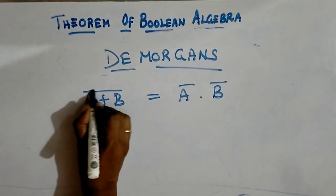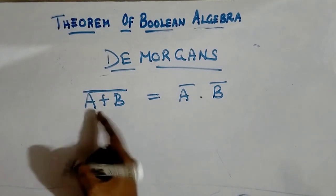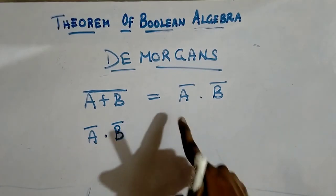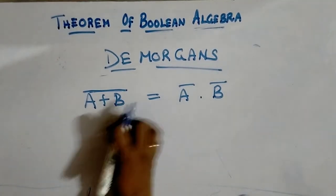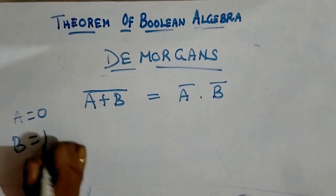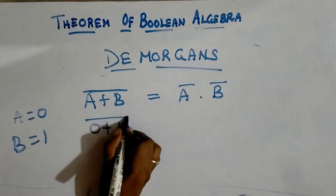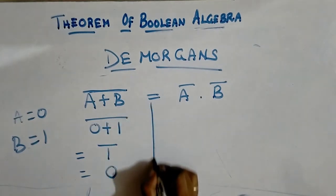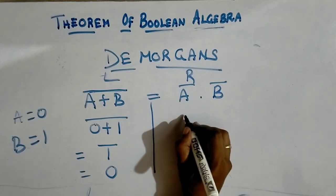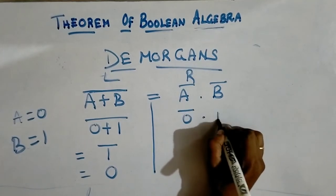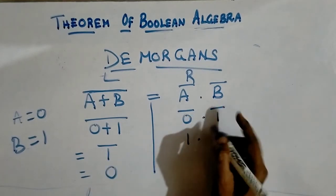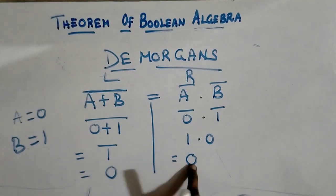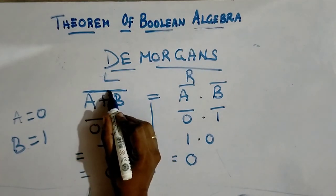The first De Morgan's law: complement of (A plus B) equals A-bar dot B-bar. When you complement A plus B, A becomes A-bar and B becomes B-bar, and the plus becomes dot. For example, A value is 0 and B value is 1: 0 plus 1 equals 1, and complement of 1 is 0. On the right-hand side: complement of 0 is 1, complement of 1 is 0, and 1 dot 0 equals 0. Both sides are equal, confirming De Morgan's law.